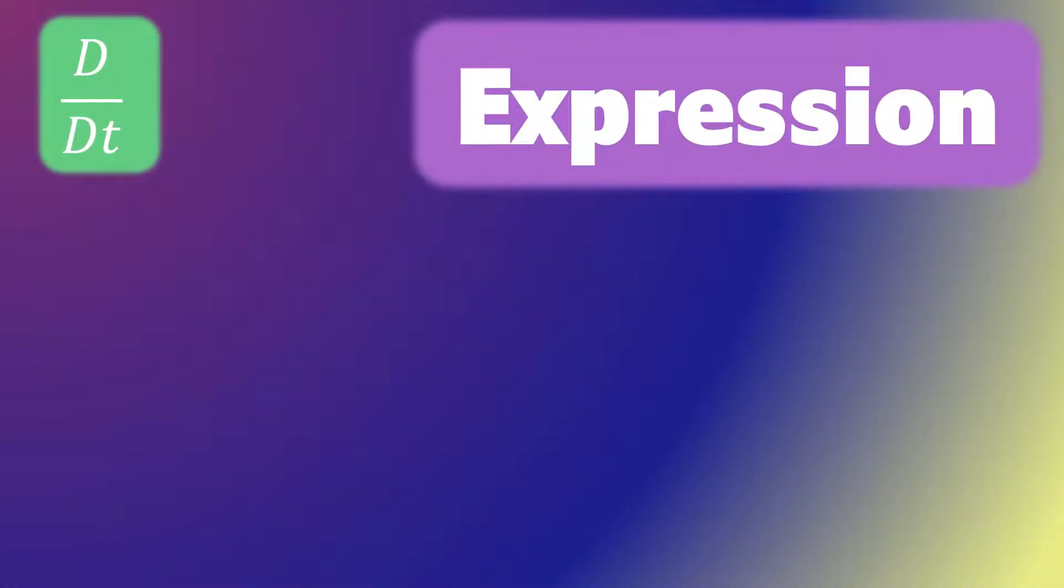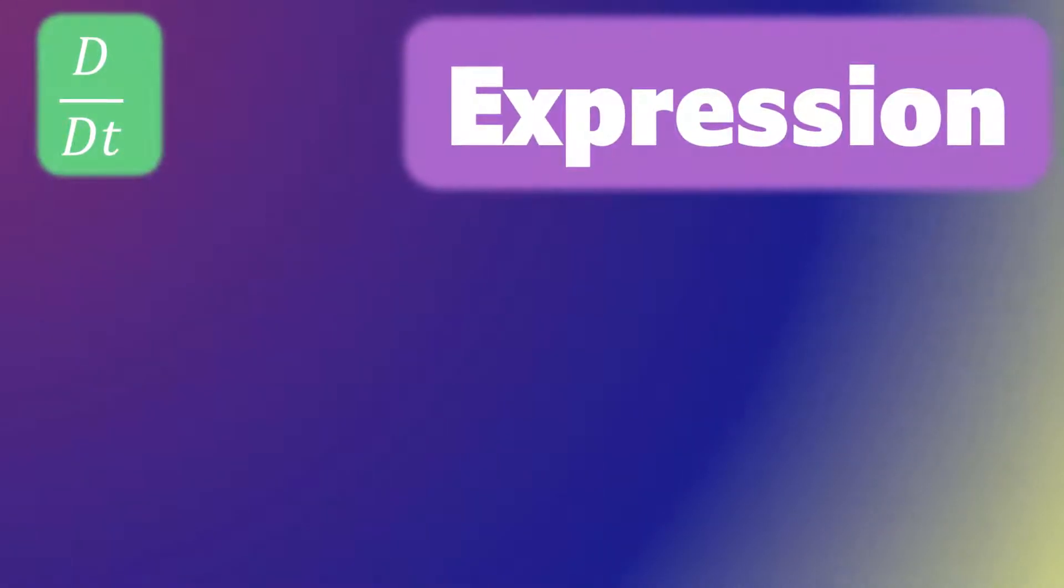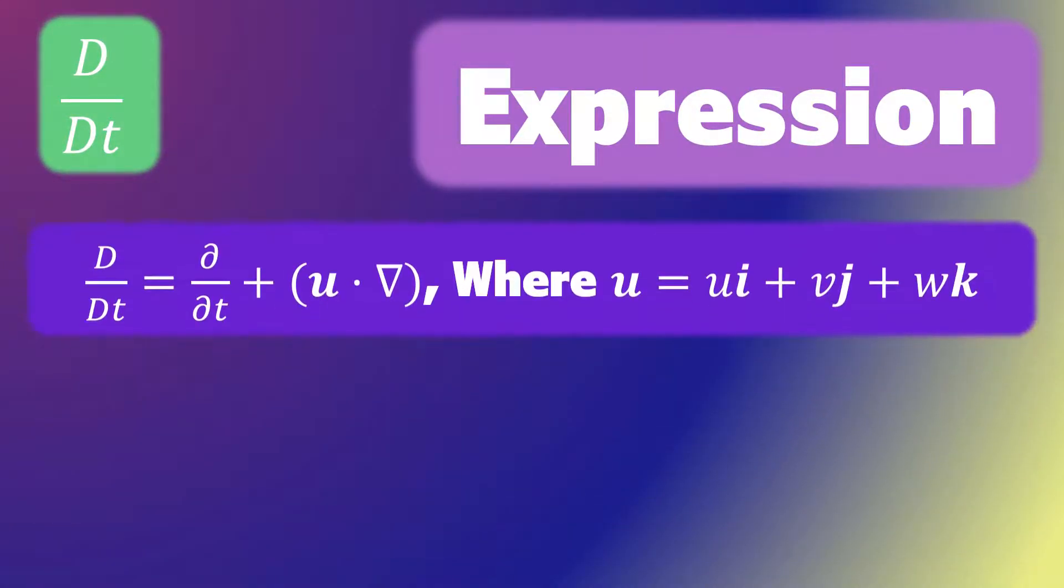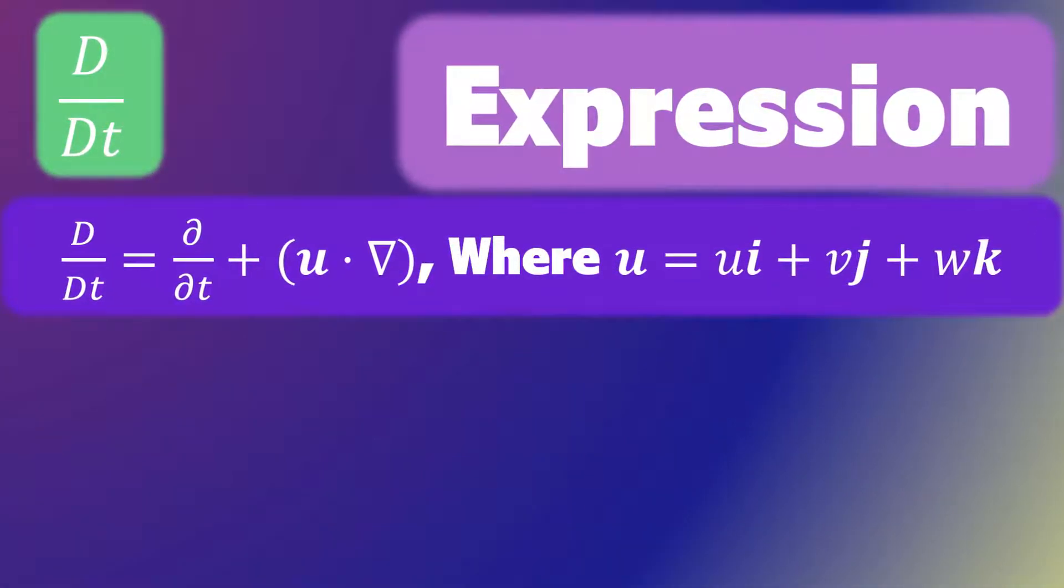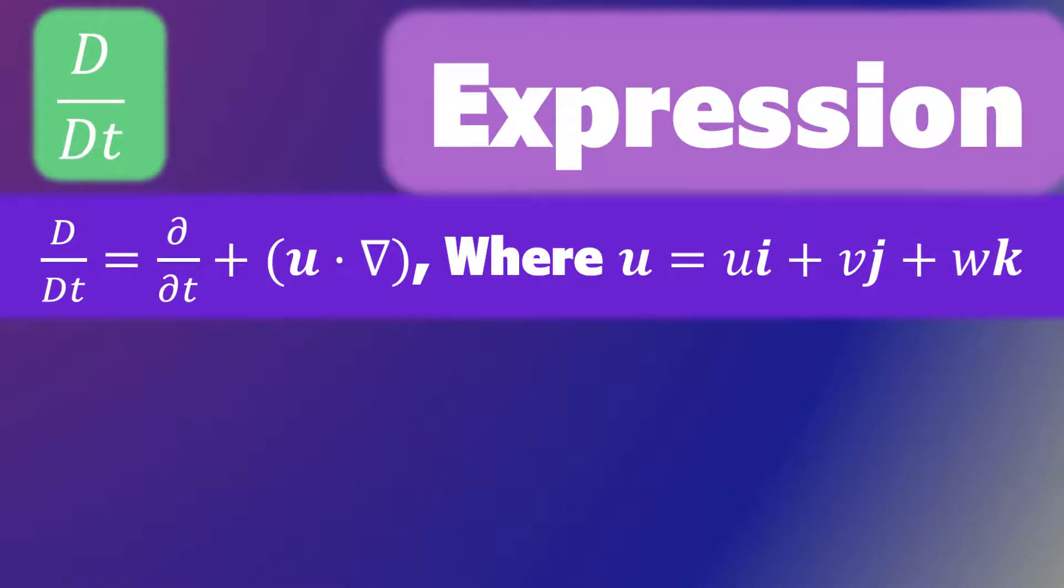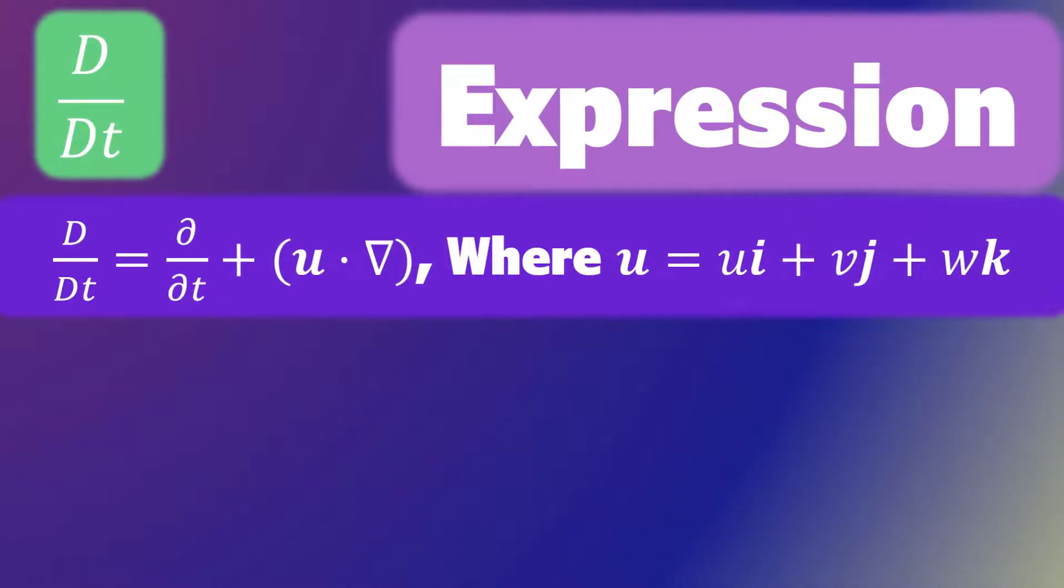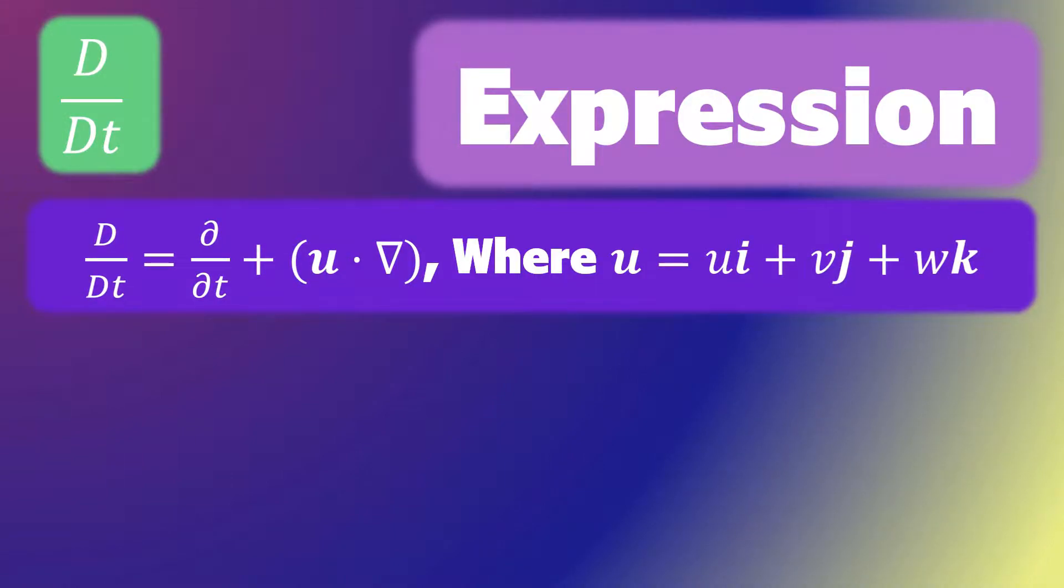The notation for a convective derivative is capital D over capital DT. In general, the convective derivative takes the form capital D over capital DT equals the partial derivative with respect to time plus u dot grad, where u equals ui plus vj plus wk, which is the velocity of the flow.